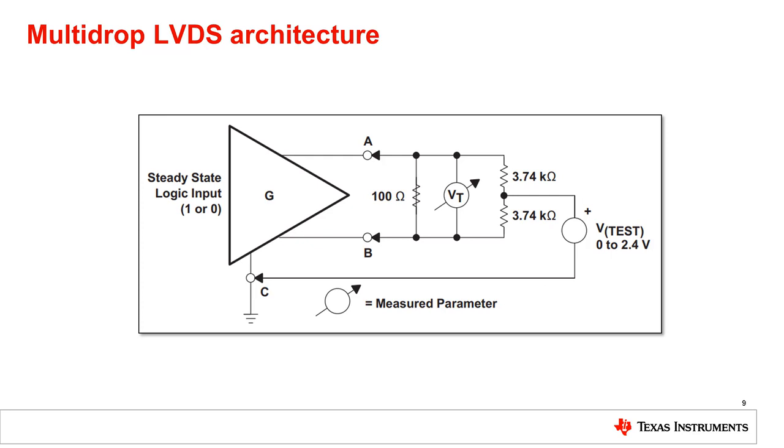You can see this illustrated in the test circuit depicted in the 644A standard. The 3.74 kiloohm represents 32 receiver nodes, 120 kiloohm each, connected to one driver. And the V-test represents the common mode voltage range of the receiver.